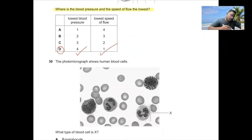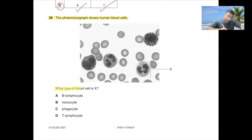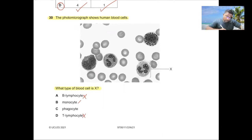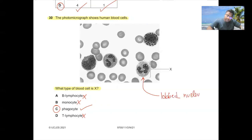Question number thirty. The photomicrograph shows human blood cells. What type of cell is X? Cell X cannot be a lymphocyte, as lymphocytes have large nuclei. It cannot be a monocyte. It can only be a phagocyte because it has a lobed nucleus. C is the correct answer. A lobed nucleus easily identifies a phagocyte.